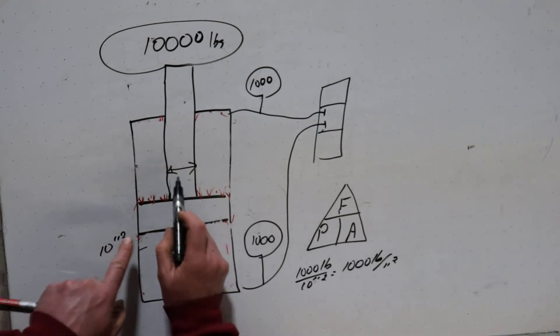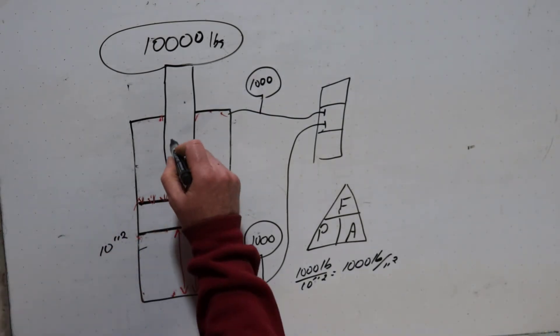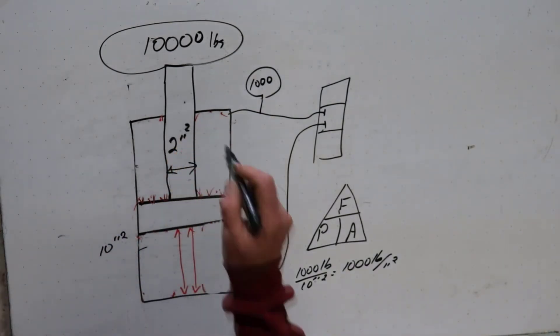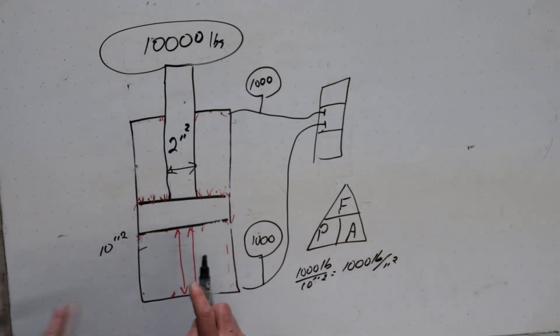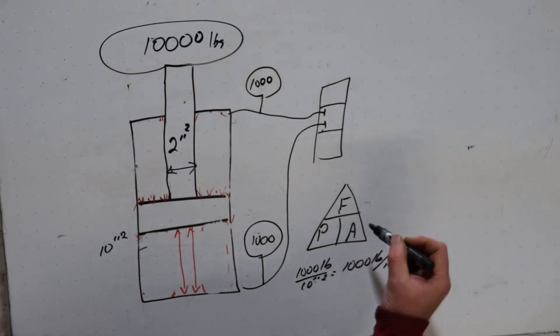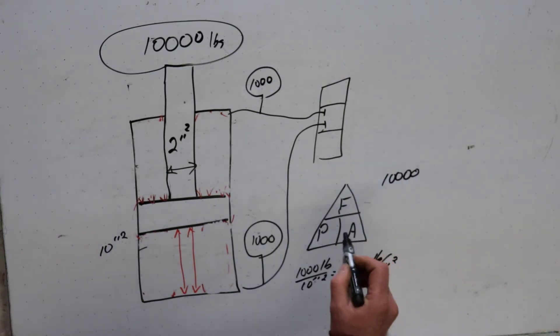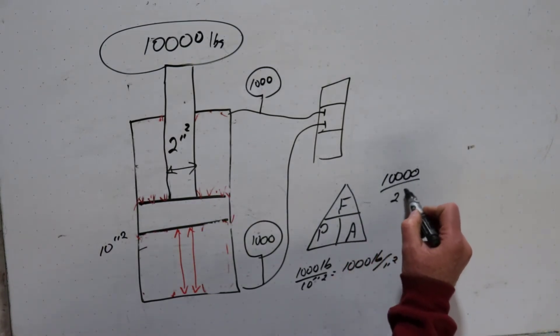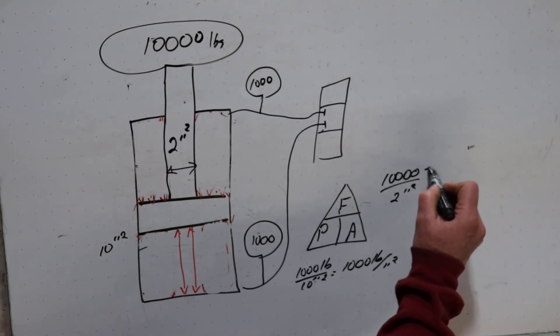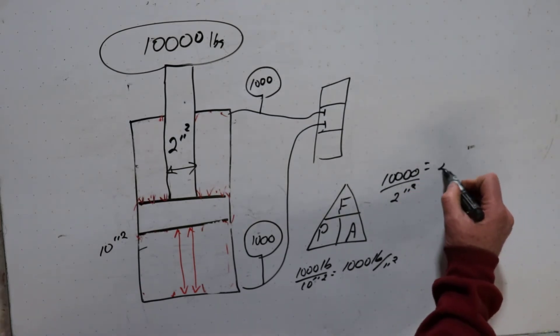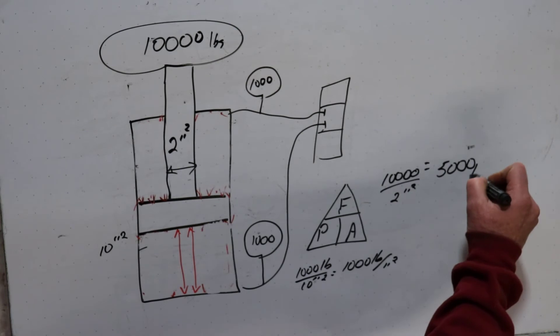Now, if the rod area is only 2 inches squared, the area of the rod, that's the only difference on the bottom is holding it up. So that means this 10,000 pounds is now being supported by only 2 square inches. Do the math again. 10,000 pounds divided by 2 inches squared. That equals 5,000 psi.